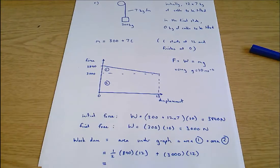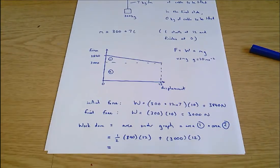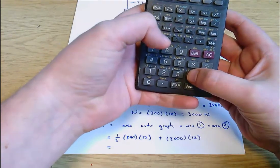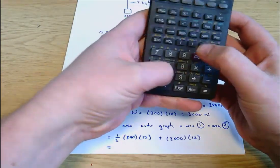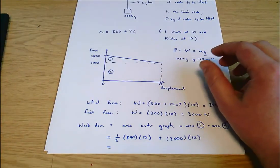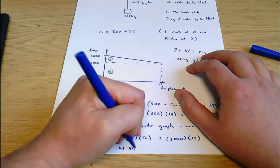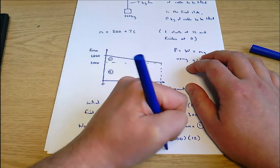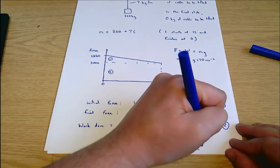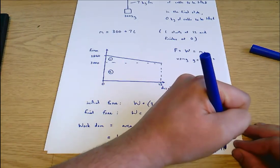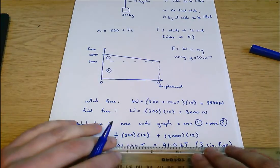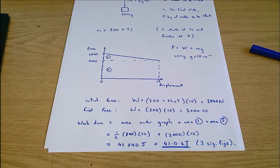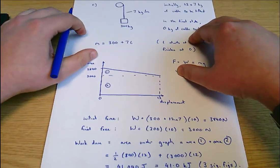Now at this stage you can go to a calculator. At any stage you can go to a calculator, but at this stage I'm going to go to my calculator. 840 times 12 divided by 2 plus 3000 times 12. 41040 joules. This is work done. I'm going to say that's 41.0 kilojoules to three significant figures. You don't have to represent it as 41.0 kilojoules, but that seems like a reasonable thing to go with. And that is now the complete answer.